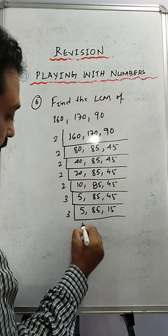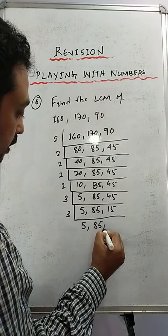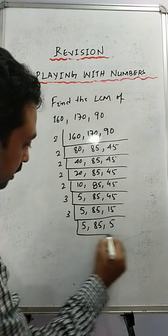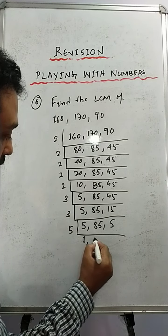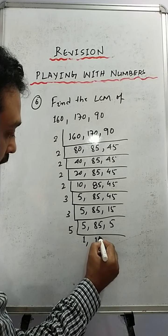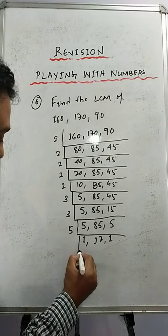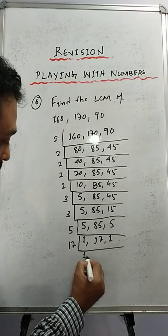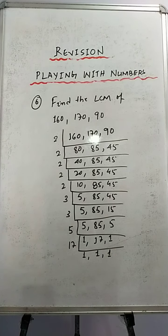Again it is divisible by 5: giving 85, 1 — 5 times 3 is 15. Now finally we'll divide by 5: giving 1, 17, 1. And then 17 — 1, 1, and 1 — because 17 is a prime number.